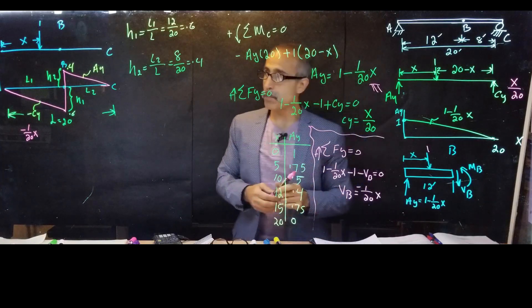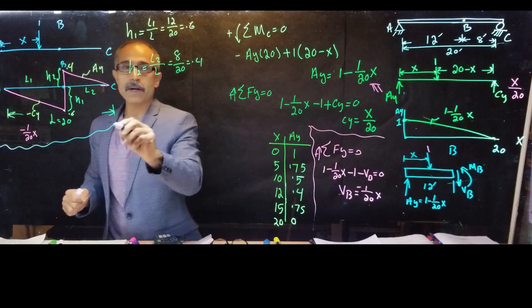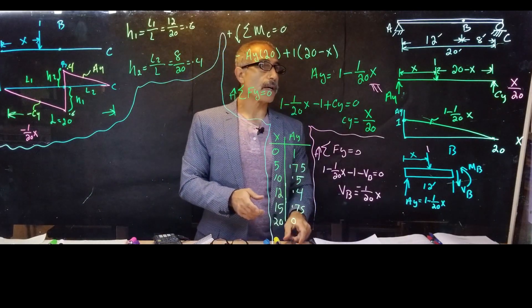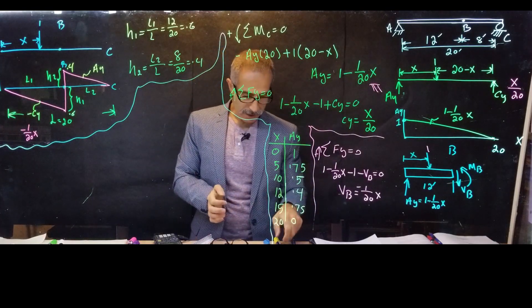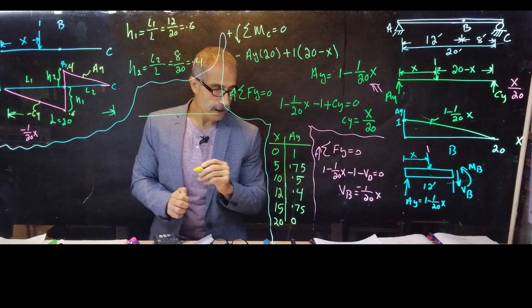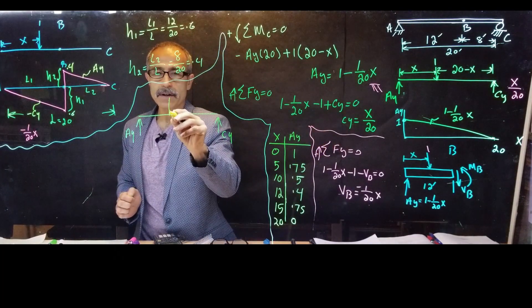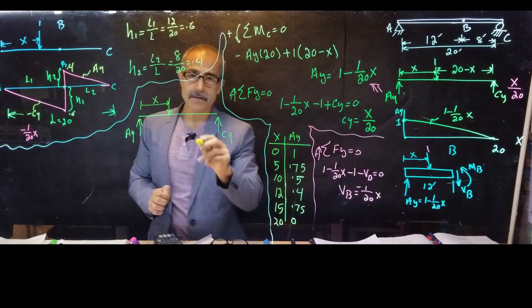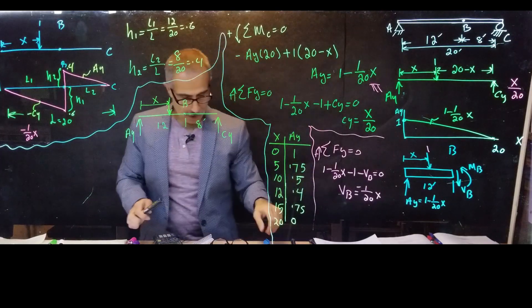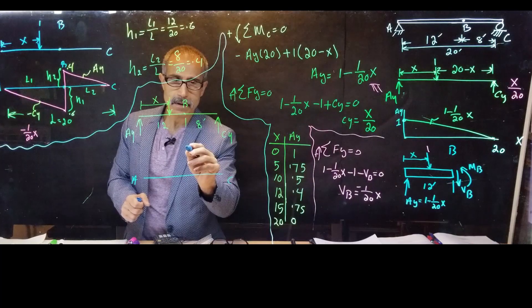Now we're going to do the influence line for moment. Using the same beam with A_Y and C_Y already known, we have point B at 12 feet from A and 8 feet from C. We'll draw the moment influence line underneath the beam diagram. To find it, we cut the beam at B and apply moment equilibrium.